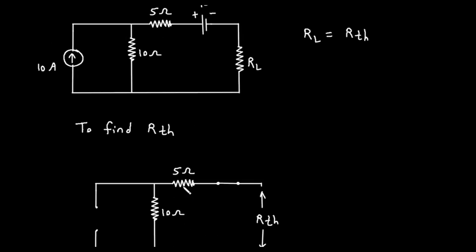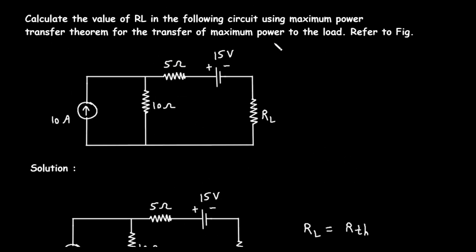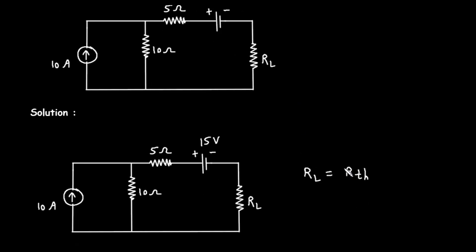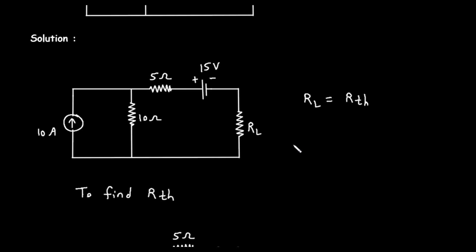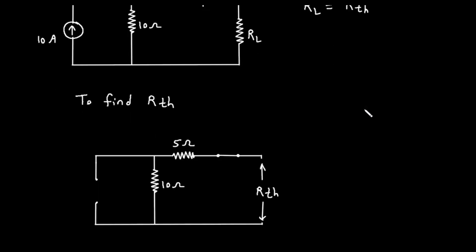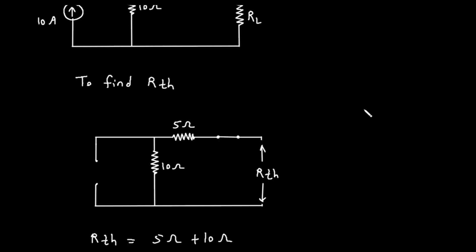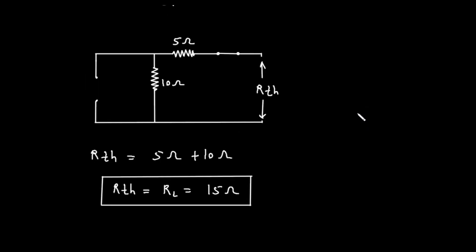To summarize, we started with the maximum power transfer theorem, which set the condition that R sub L must equal R sub TH. We then calculated R sub TH by removing the load, deactivating the independent sources, opening the current source and shorting the voltage source, and calculating the resulting equivalent series resistance. This gave us our final answer.